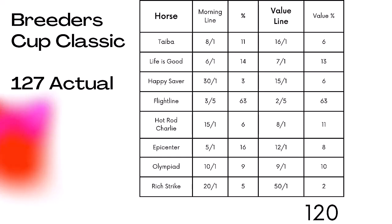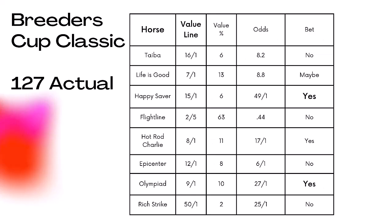Looking at the actual odds on the Breeders' Cup Classic: Taba went off at 8 to 1, but my value line was 16 to 1 — so you wouldn't bet him. Life is Good was 7 to 1 on my value line, 9 to 1 on the odds — maybe bettable. Happy Saver was 15 to 1 on my value line, went off at 49 to 1 — definitely a play. Flightline was 2 to 5, right at fair odds on the win end. Hot Rod Charlie was 8 to 1 on my line, went off at 17 to 1 — playable on an exacta. Olympiad was 9 to 1 on my value line, went off at 27 to 1 — very playable. So the only three bets in the race were Happy Saver, Hot Rod Charlie, and Olympiad.